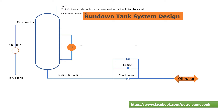Second, the level transmitter — to monitor, provide low level alarm, and high level start permissive. If the level transmitter reading becomes lower than the lower alarm, the rotating equipment cannot start.